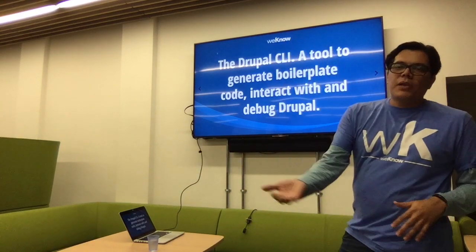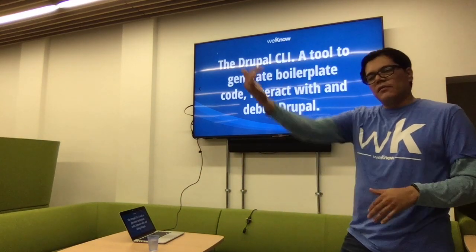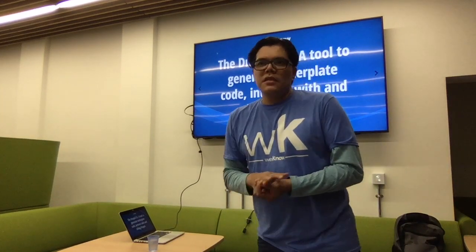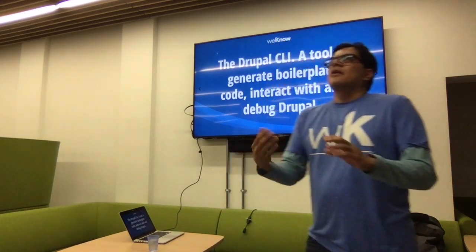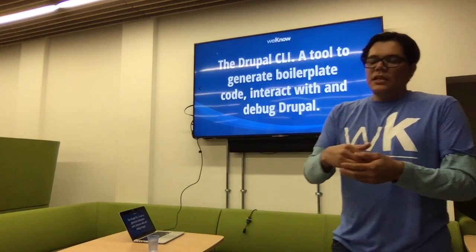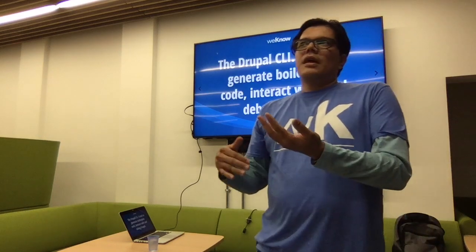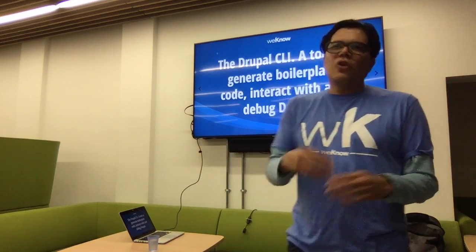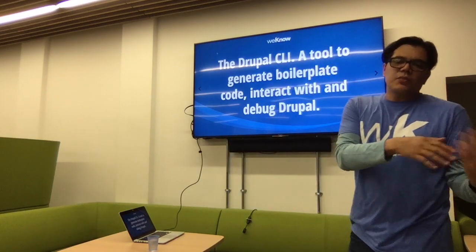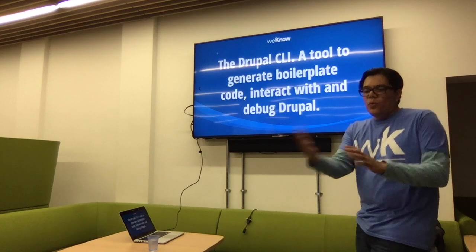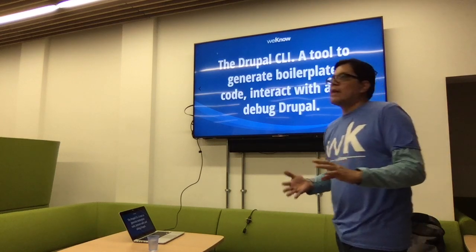Then as we were generating code — routes, controllers, forms, plugins — we needed to debug the system to confirm all those components were properly created and registered. This is where all the debugging commands started being added: debug:plugin to list all plugins, debug:routes to list all routes, debug:container to list all services in the service container.